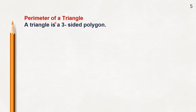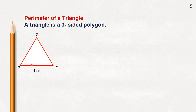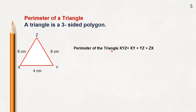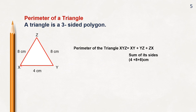Let us understand how to find the perimeter of a triangle. A triangle is a 3-sided polygon. In this triangle, one side is given as 4 cm, another side is given as 8 cm, and one more side is given as 8 cm. We will have to add all 3 sides to find out its perimeter. So the perimeter of triangle XYZ is equal to XY plus YZ plus ZX — that is 4 cm plus 8 cm plus 8 cm — which equals 18 cm. The perimeter of the given triangle XYZ is 18 cm; it is nothing but the sum of its sides.